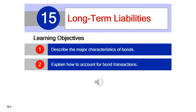Good day everyone, welcome back to Introduction to Financial Accounting 2. Today we're looking at Chapter 15, which talks about long-term liabilities. This chapter has four learning objectives, but we are only covering the first two: the first one is to describe the major characteristics of bonds, and the second is to explain how to account for bond transactions. So let's begin our lecture.